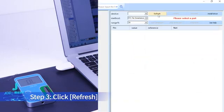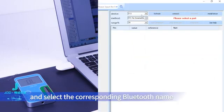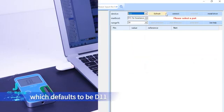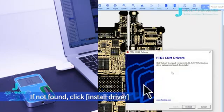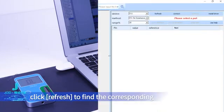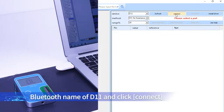Step 3: Click Refresh and select the corresponding Bluetooth name, which defaults to be D11. If not found, click Install driver. After installation, click Refresh. Find the corresponding Bluetooth name of D11 and click Connect.